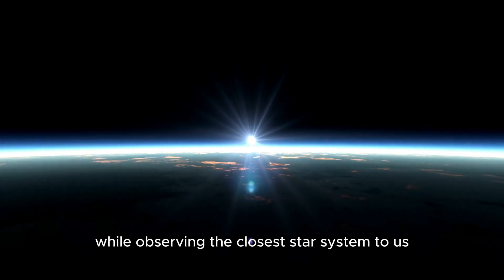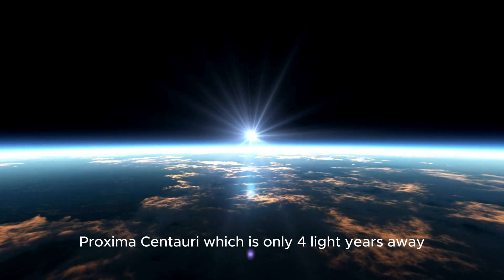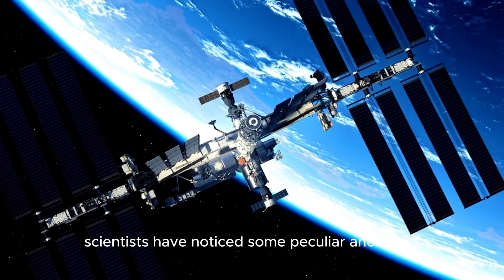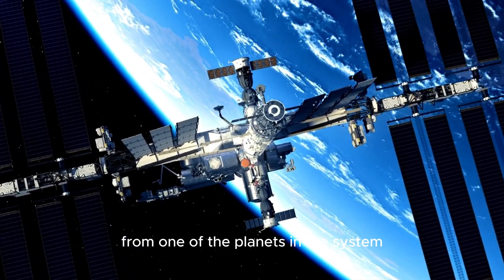While observing the closest star system to us, Proxima Centauri, which is only four light-years away, scientists have noticed some peculiar anomalies from one of the planets in the system, Proxima b.